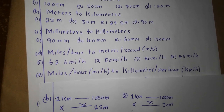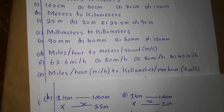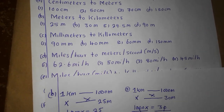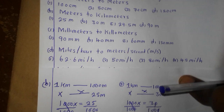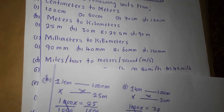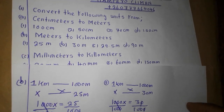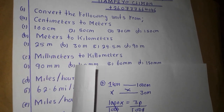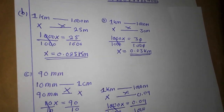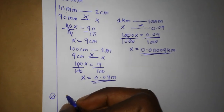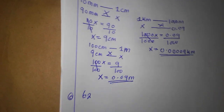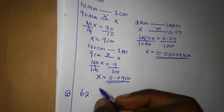Part D is converting from miles per hour to meters per second. We have 62.6 miles per hour and also 50 miles per hour to convert.